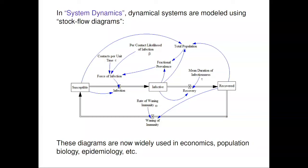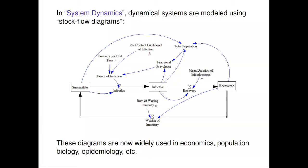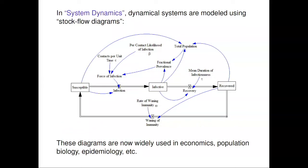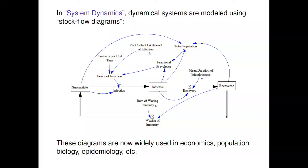Here's a much simpler example. I'm going to focus on a simpler situation just to keep the distractions to a minimum — a particular case where the flow variables are purely functions of stocks, with no intermediate additional variables. The boxes are called stocks, the double-edged arrows are called flows, and the blue arrows are links. Links always, in this simplified version, just point directly from stocks to flows. That's the structure of the stock flow diagram.